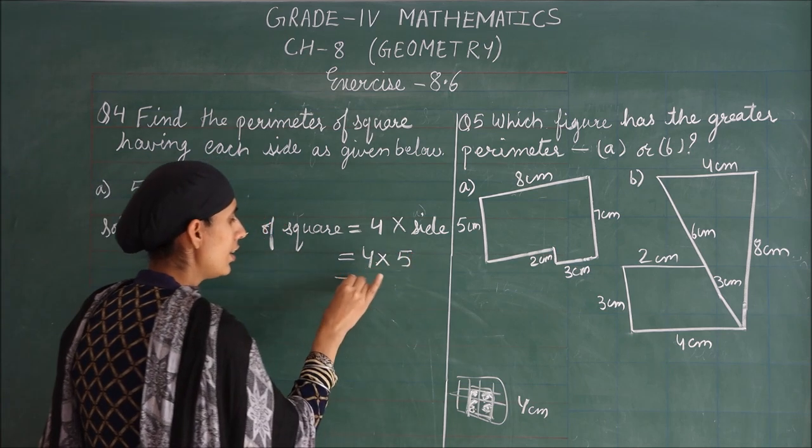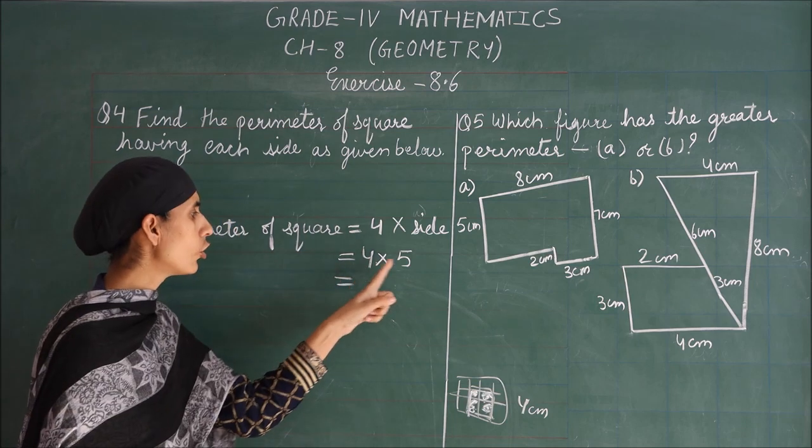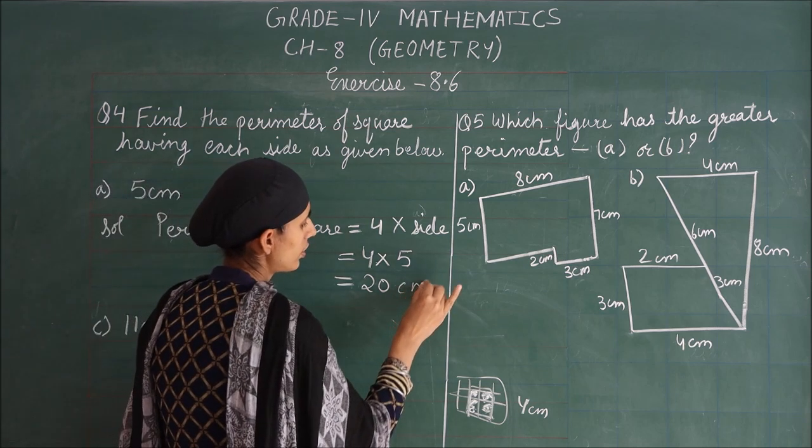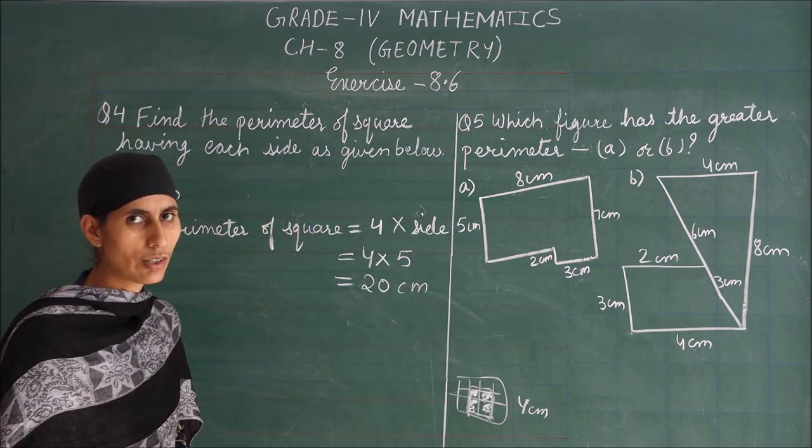For part a), we have side equals 5 centimeters. Now we will multiply: 4 times 5 equals 20. The unit is centimeter, so the perimeter equals 20 centimeters.